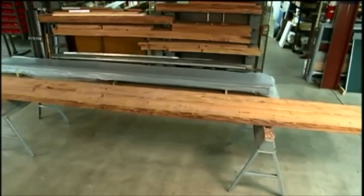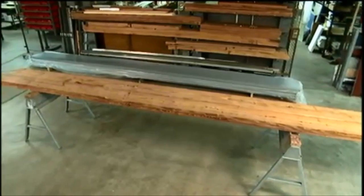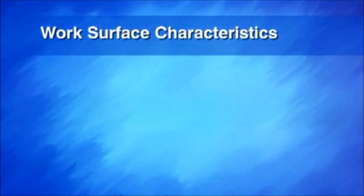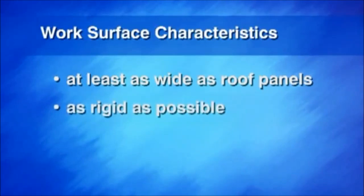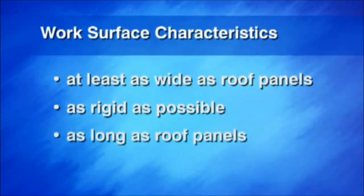An adequate work surface is important to the proper application of the laminates. The table must be at least as wide as the roof panels, but no more than 6 inches wider than the panel width to allow easy access to the laminates during application. It should be as rigid as possible and as long as the longest roof panels that will receive laminates.